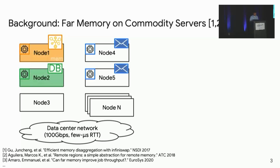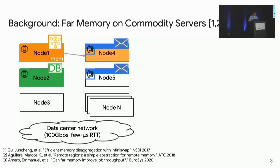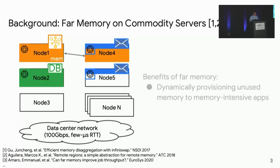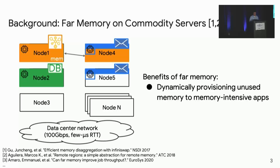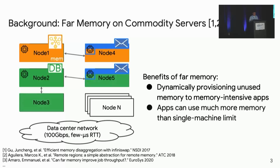At some moment, the memory-intensive graph processing and database applications use most of their local memory, while nodes 4 and 5 have a lot of unused memory. The far memory technique aggregates this unused memory into a far memory pool accessible via the fast data center network, letting memory-intensive applications dynamically allocate memory from this pool. This way, data center operators can dynamically provision unused memory to memory-intensive applications, allowing them to use much more memory than a single server's limit.